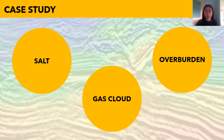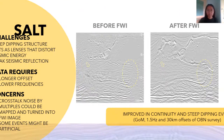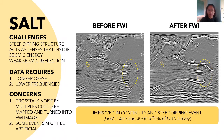Moving on, I will continue with the application of FWI methods on challenging geological structures, particularly in salt bodies, gas cloud, and overburden, together with imaging results from various research papers. For complex geological structures such as salt, the main challenges would be its steep dipping structure, which acts as lenses that distort the seismic energy, thus weakening the seismic reflection.